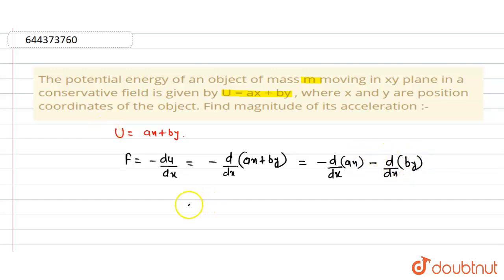We can write in terms of coordinates, so this value can be written as minus a i cap minus b j cap. So this is the vector F.